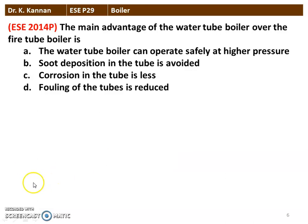Next question from the 2014 question paper: the main advantage of water tube boiler over the fire tube boiler. Among the four options, the correct answer is that the water tube boiler can operate safely at higher pressure. The other options given are not correct.